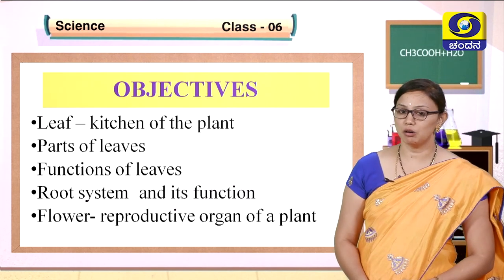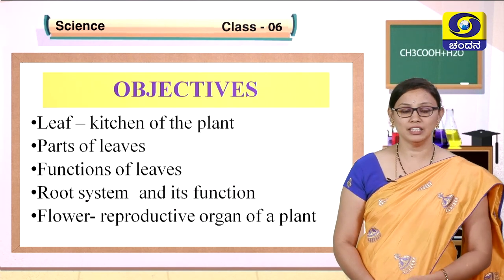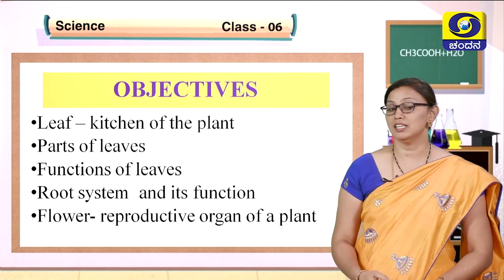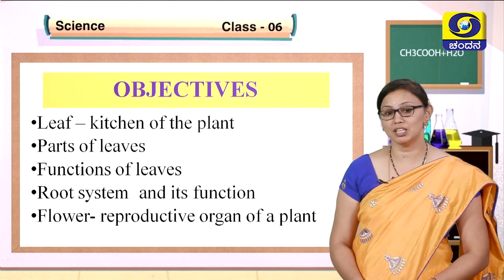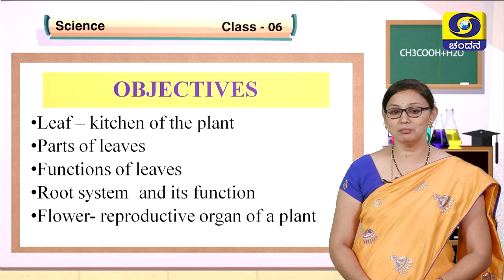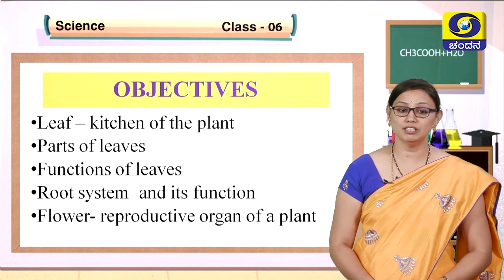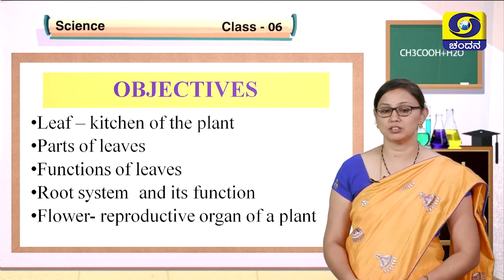Today's objectives are: the leaf as the kitchen of the plants, the parts of the leaves, the functions of leaves, root system and its functions, and flower as the reproductive organ of a plant.